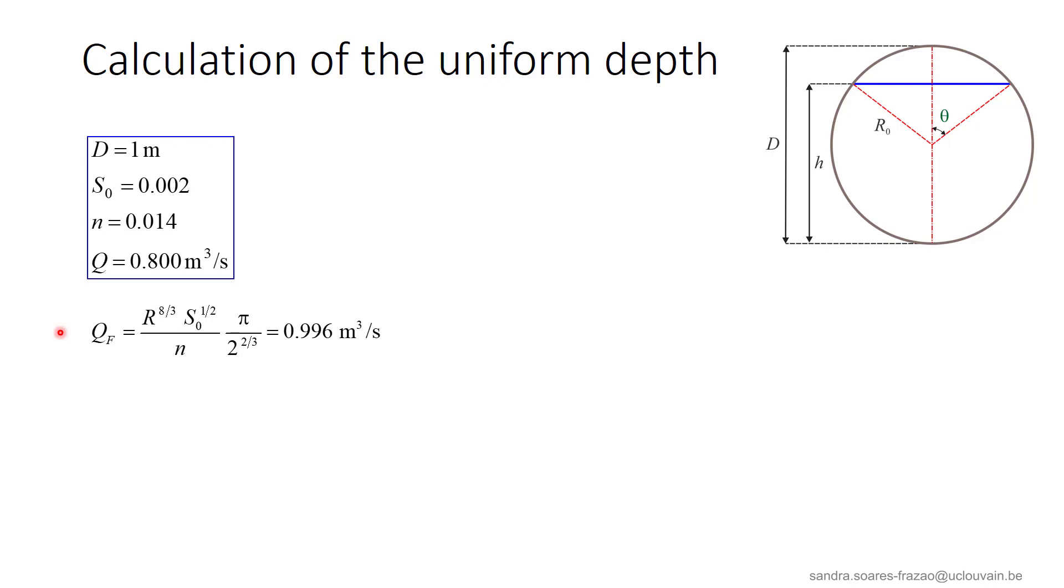In the present case, we find a value of 996 liters per second. So we conclude that the pipe can indeed receive a flow of 800 liters per second without becoming pressurized.